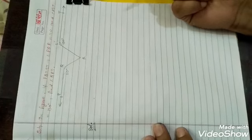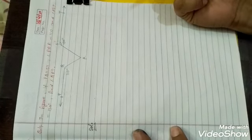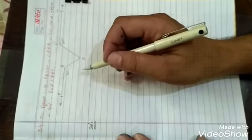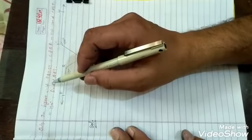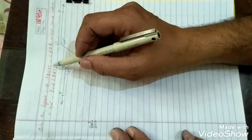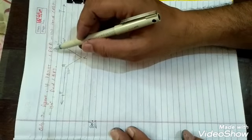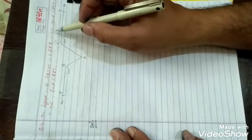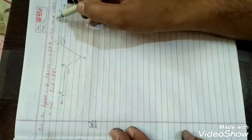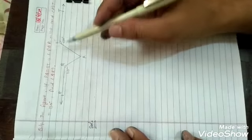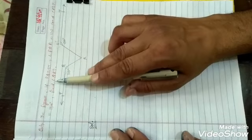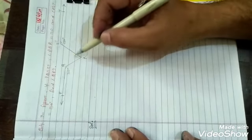Welcome to my Class 9 Mathematics class. In this video we will discuss question number 4 of Exercise 6.2. The question states: if PQ is parallel to ST, angle PQR is equal to 110 degrees, and angle RST is equal to 130 degrees, then find angle QRS.